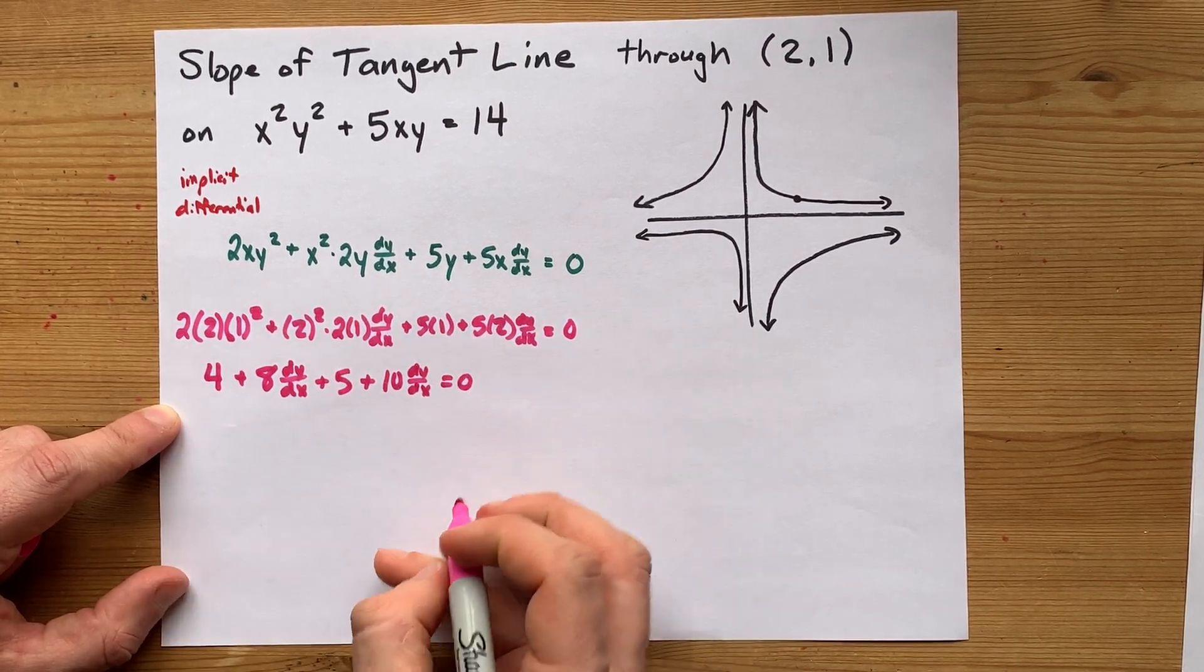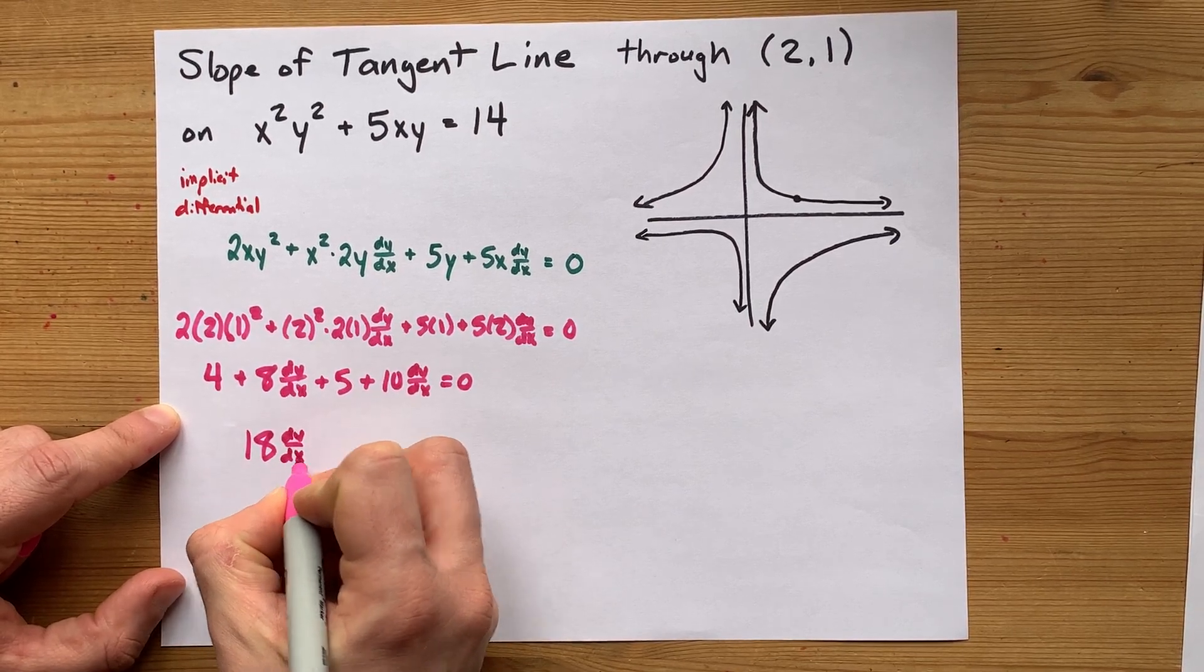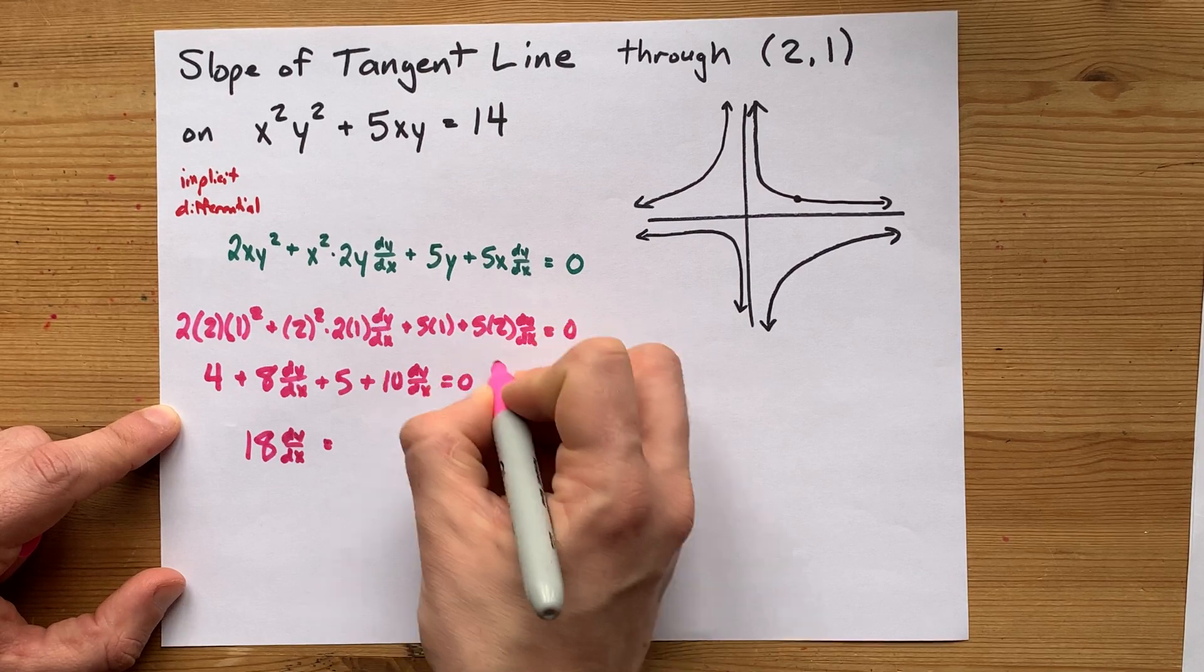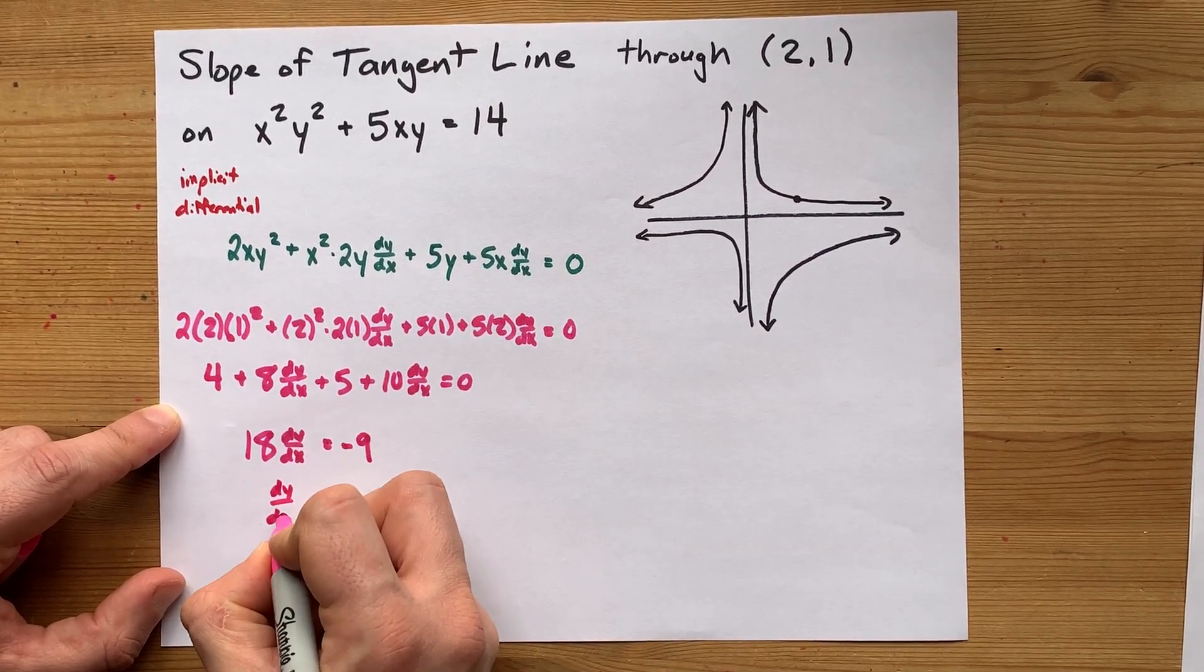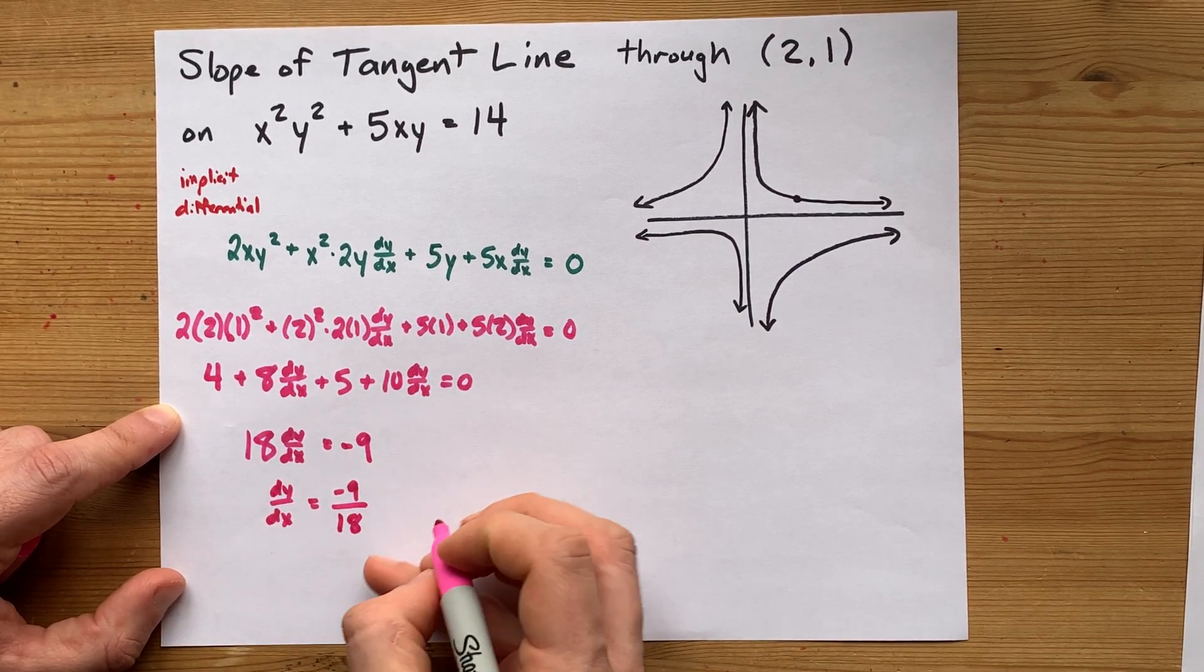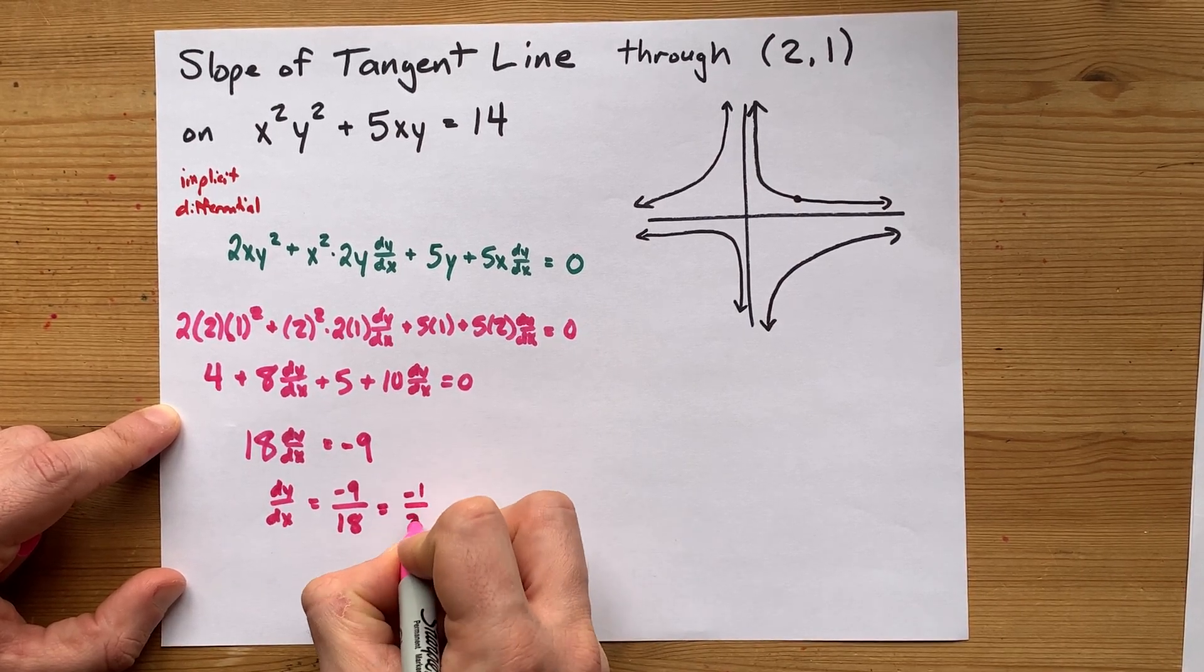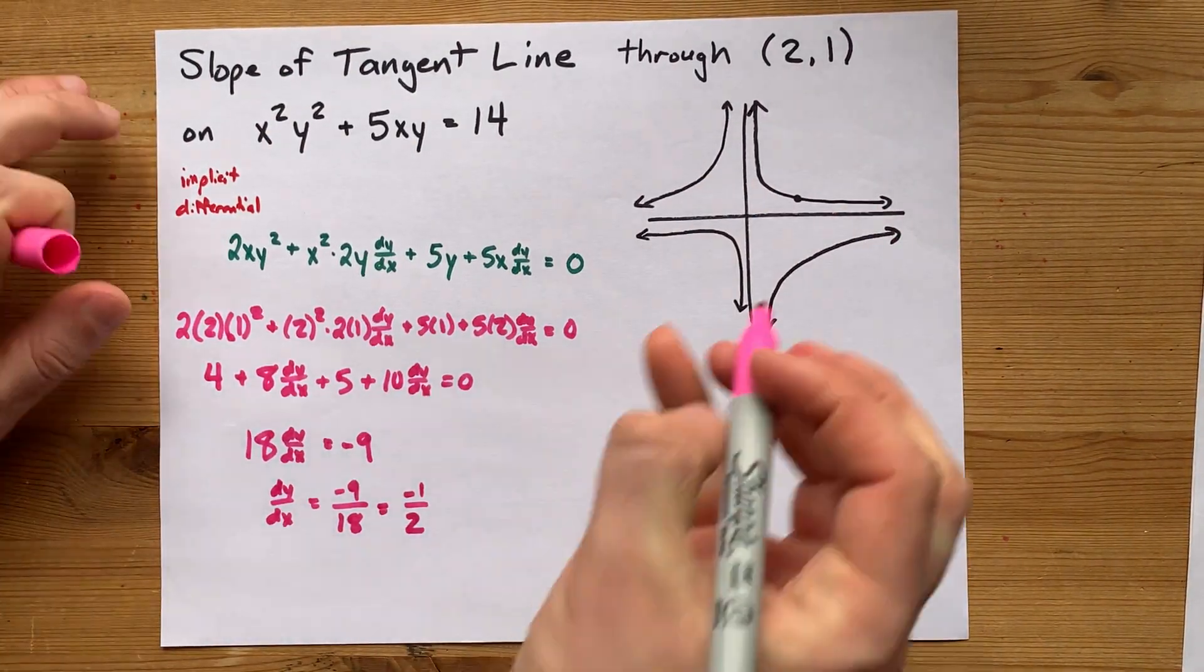Just going to move stuff to the other side here. 8 and 10 make 18 dy by dx's minus 5 minus 4 is negative 9 on the other side. If you solve for dy by dx, you get a slope of negative 9 over 18, which is negative 1 half. You're done. The slope of the tangent at that point is negative 1 half.